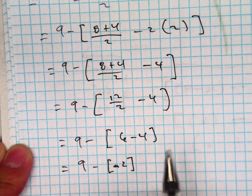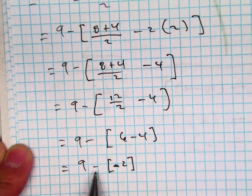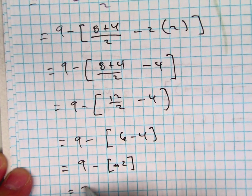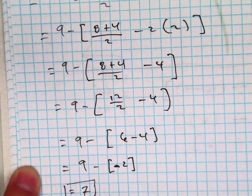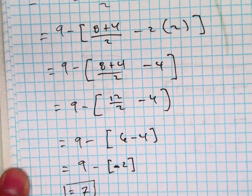No, not negative 2. Positive 2. And this reads 9 minus 2, which is 7. Raise your hand if you got 7. Yeah. Go back and see if we made a mistake. Okay.